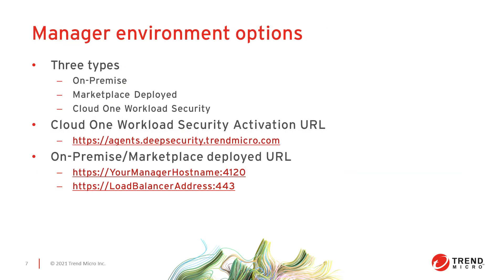Depending on which type of manager is being used, the appropriate network configuration must be in place to allow agents to initiate activation or for the manager to activate an agent. There are essentially three different types of managers available: an on-premise Deep Security Manager, marketplace-deployed Deep Security from AWS or Azure (also considered on-premise), or Cloud One Workload Security, which is the Trend Micro hosted manager option. Depending on which manager type you're activating against will determine the URLs, IP addresses, and ports that the agent will need to be able to communicate with. We maintain a document in our Help Center linked in the video description below with details about the different URLs, IP addresses, and ports used by the Deep Security Agent.